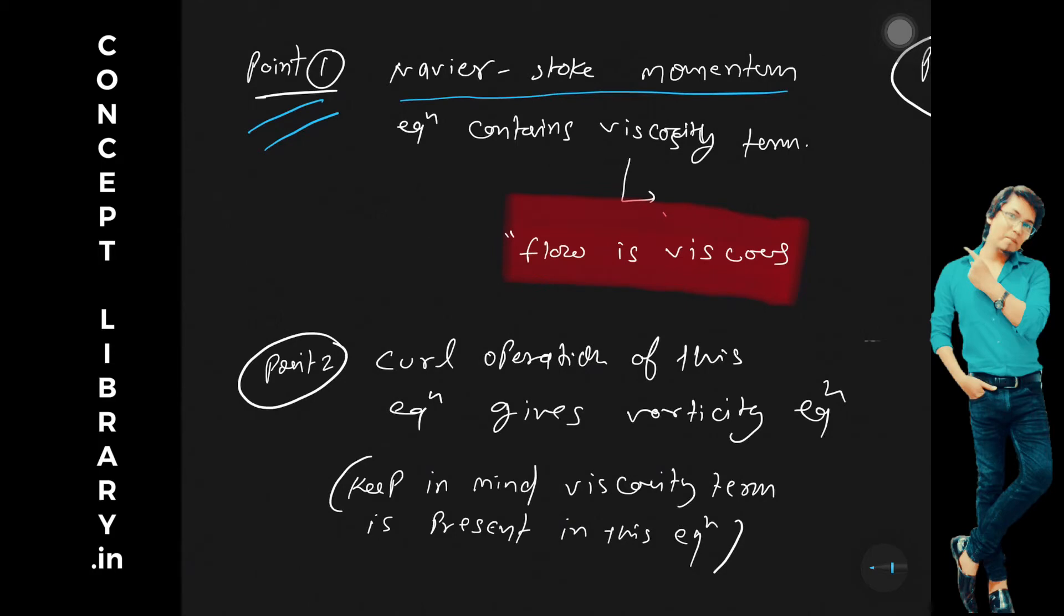Navier-Stokes momentum equation contains viscosity term. So definitely flow is viscous because, you know, for viscous flow we use Navier-Stokes equation, right?